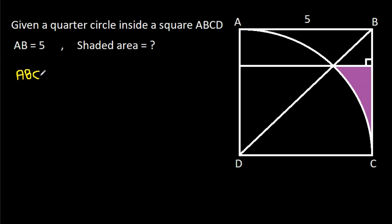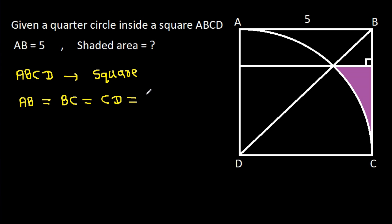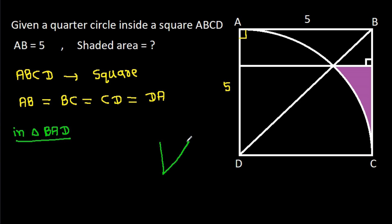We know that ABCD is a square. That means AB will be equal to BC, equal to CD, and equal to DA. So AD is 5, and this angle BAD is 90 degrees. AB is 5 and AD is 5.